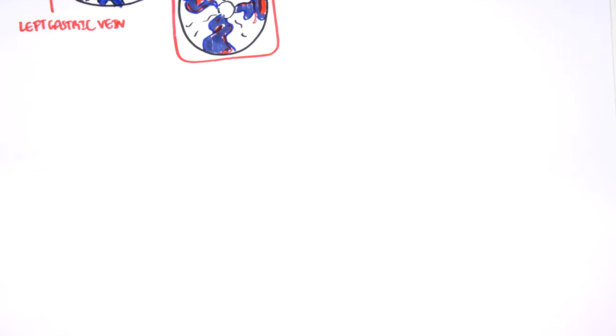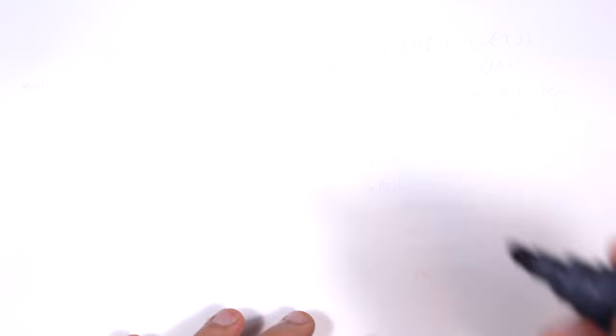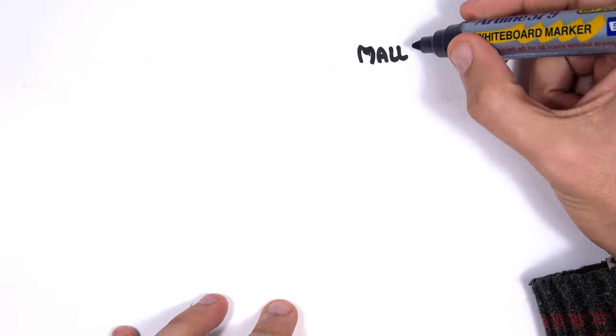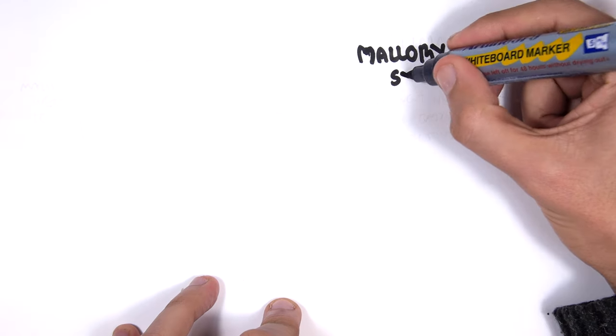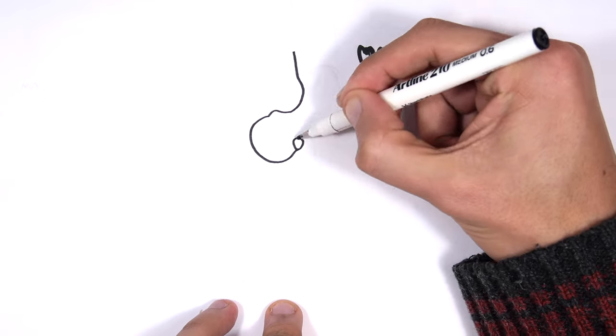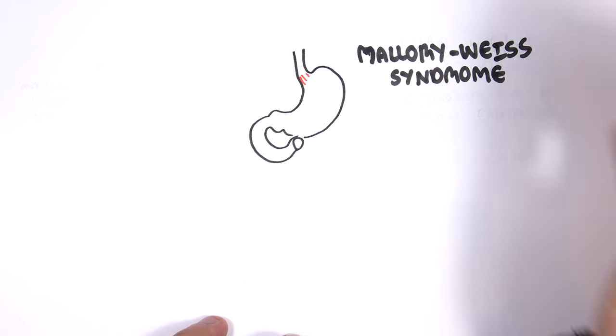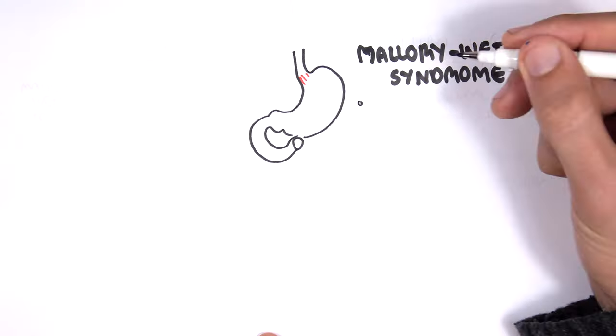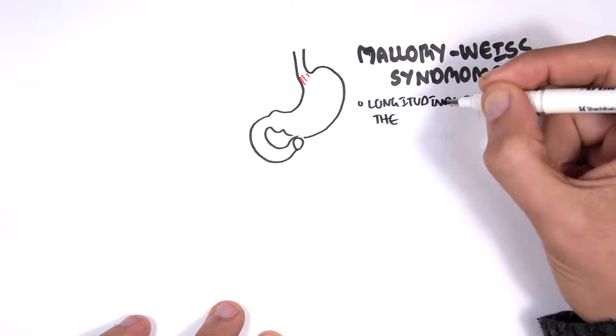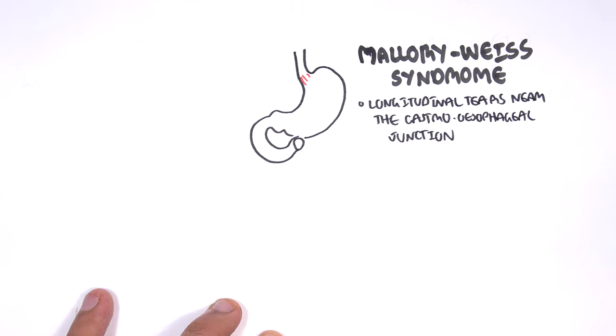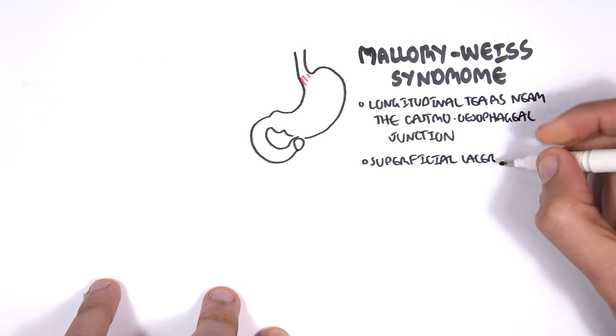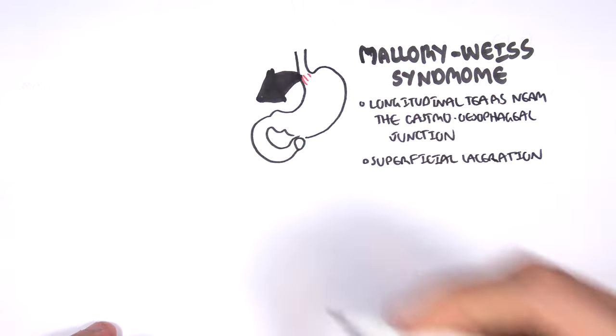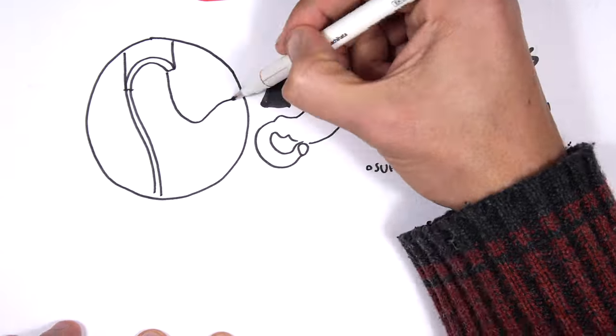The next condition is Mallory-Weiss syndrome. Mallory-Weiss syndrome has to do with the connection between the esophagus and stomach, where we have a tear. In Mallory-Weiss syndrome we have longitudinal tears near the cardioesophageal junction. These are superficial lacerations. If we zoom into the area, these are the Mallory-Weiss tears.